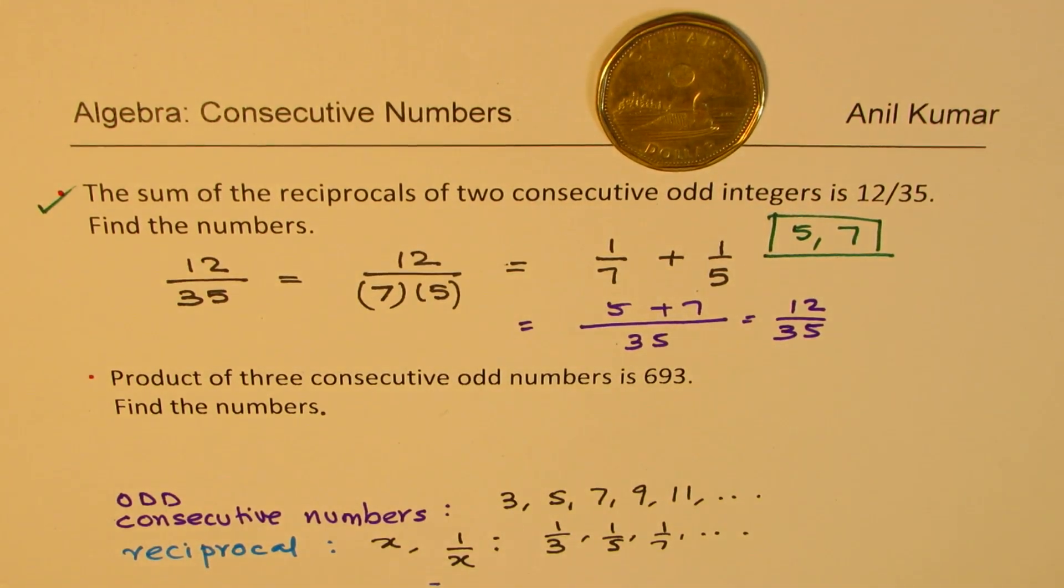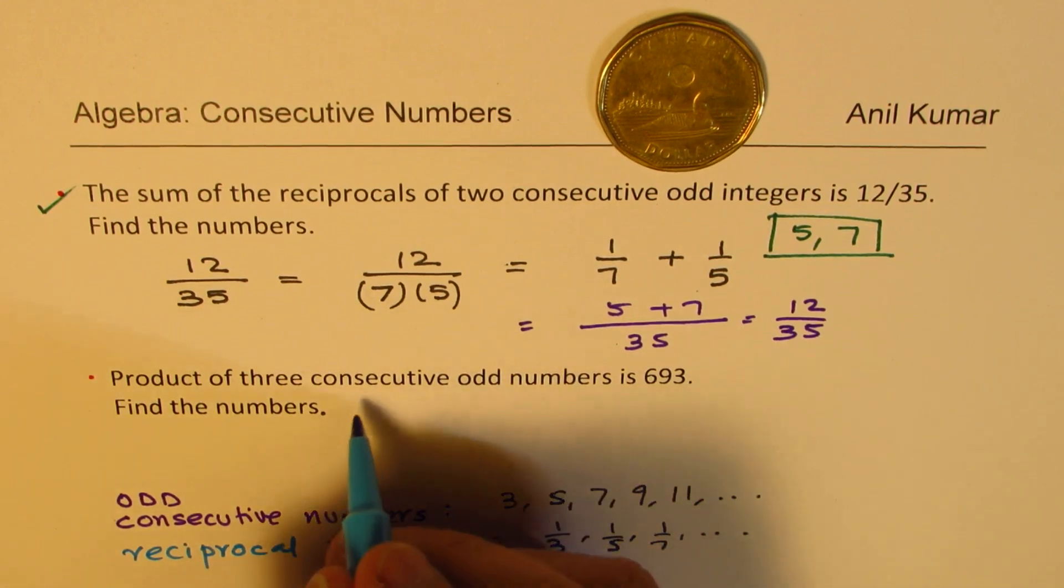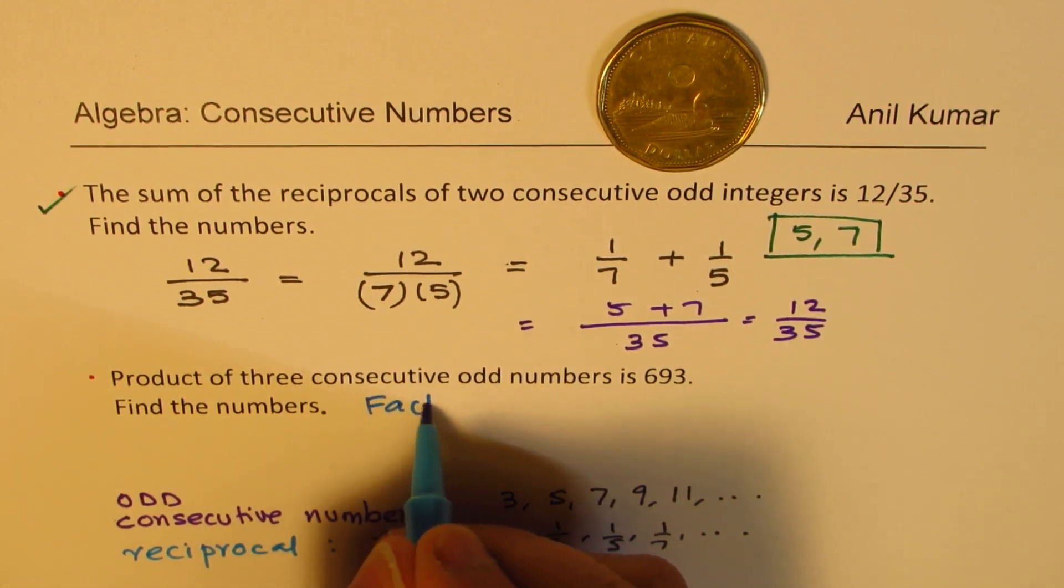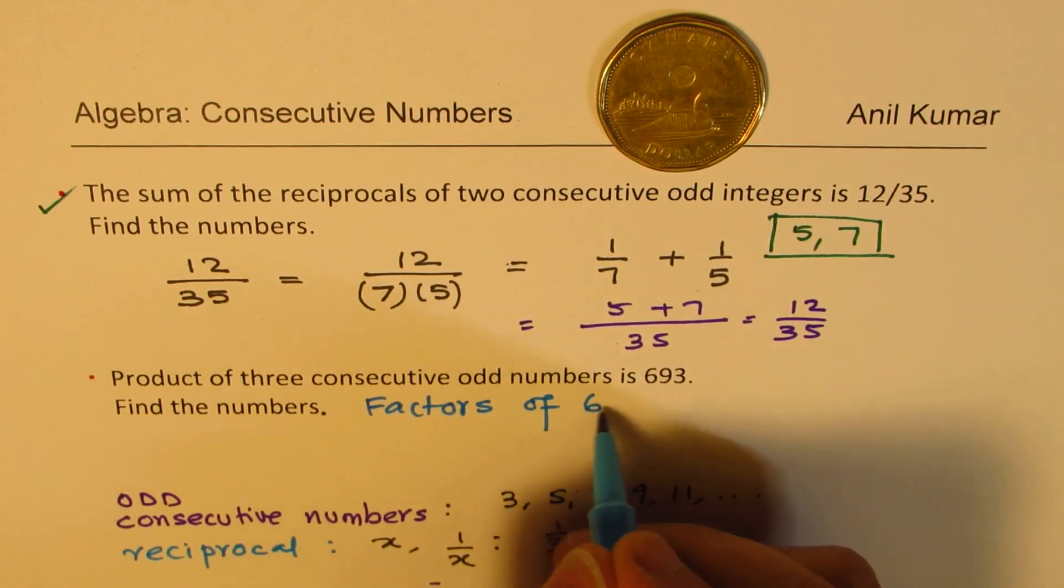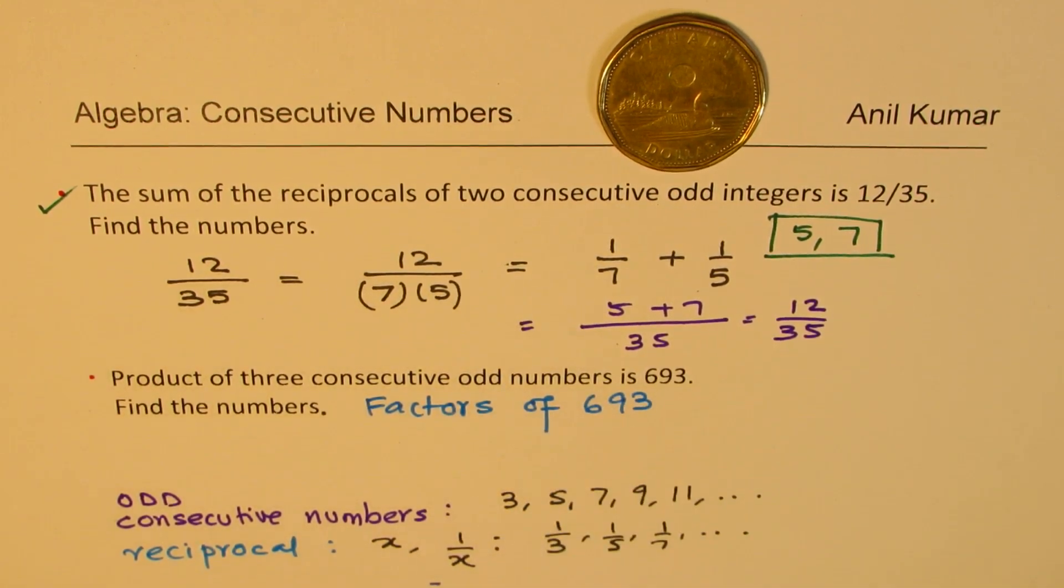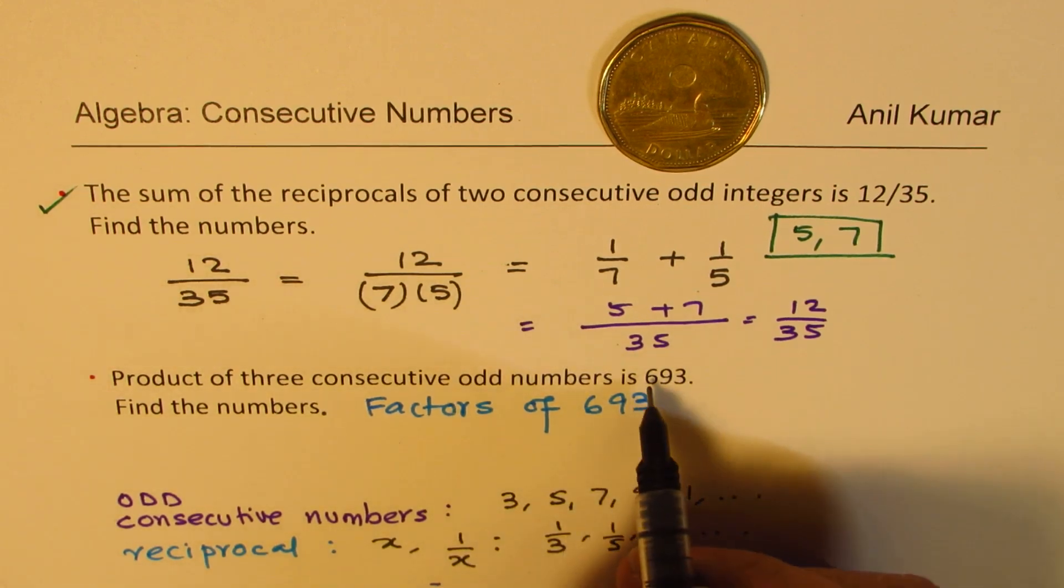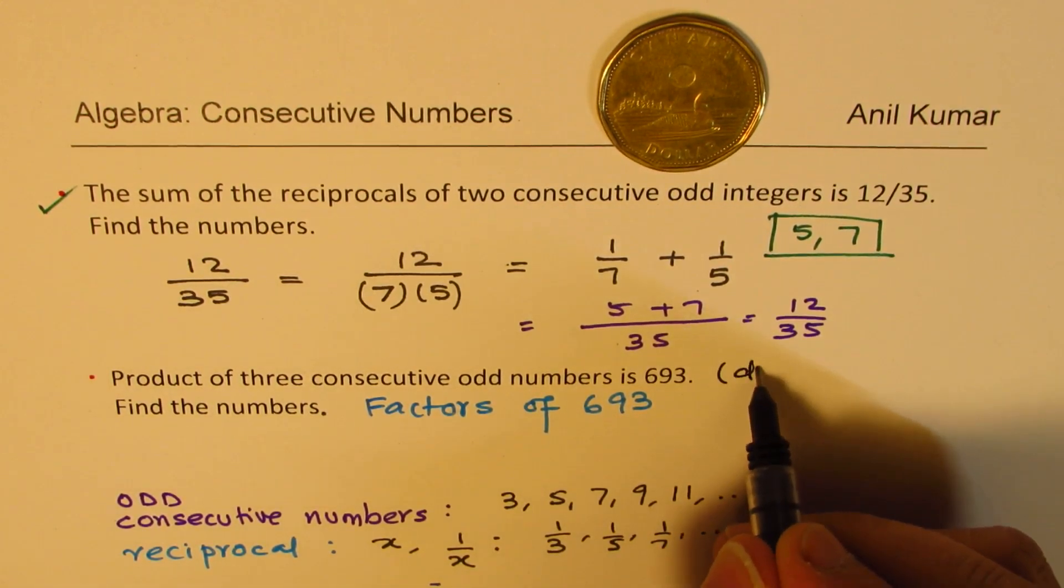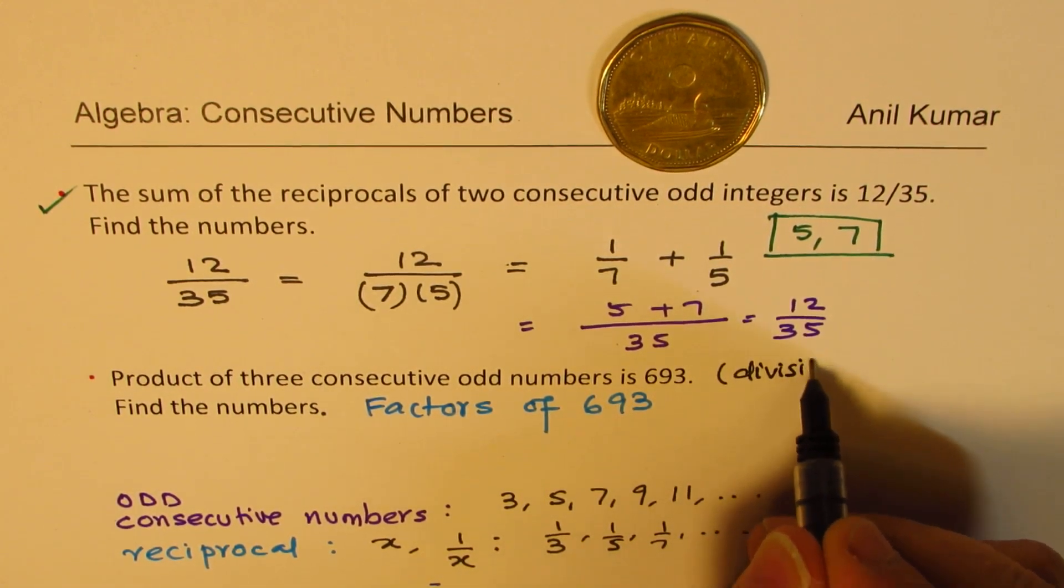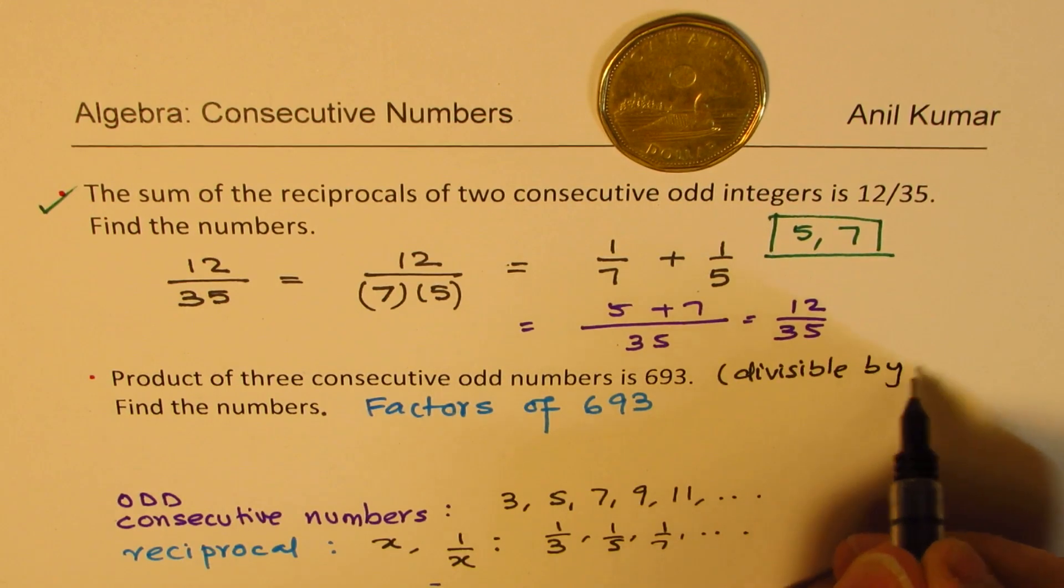Now let us look into the solution of the second question. It is product of three consecutive odd integers. So in this, my strategy will be to find factors. So find factors of 693. How do you find factors of 693? Well, 6, 9, 3, 6 plus 3 is 9 and that is 9. So it is divisible by 11.